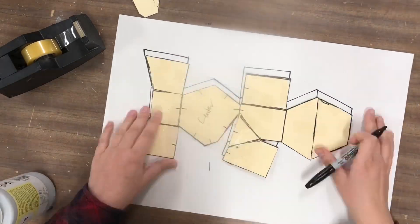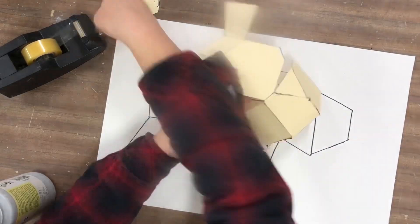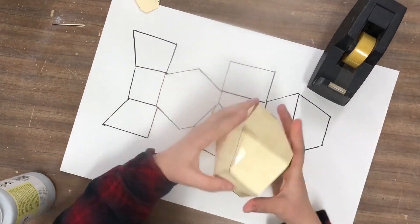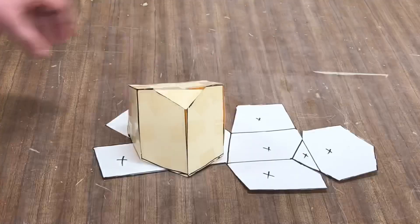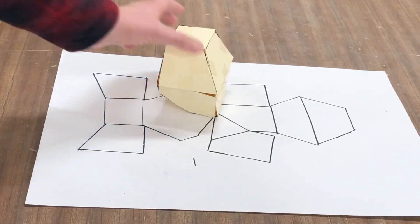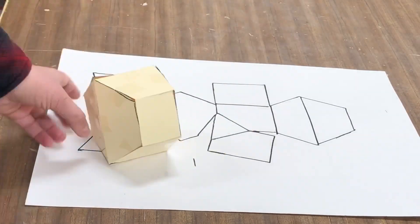Once you've got an accurate tracing of your net, reassemble your form. Experiment with a variety of prisms, incorporating facets in interesting angles. The possibilities are endless.